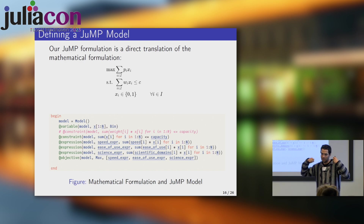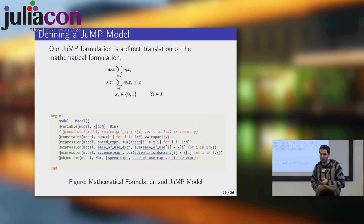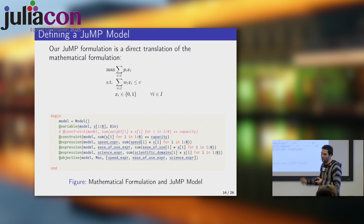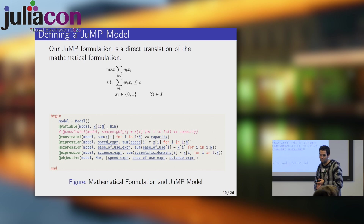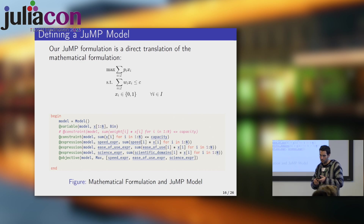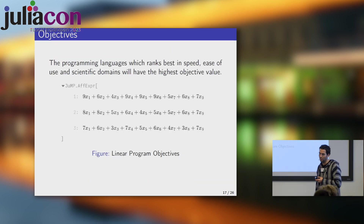We will now define a mathematical optimization problem. This is what we call a knapsack problem — we have a backpack. The constraint is we only want to use one language and not be in the two-language problem, so the constraint is you can only choose one language. In the next part, which is your homework, there will be weights assigned to different criteria, so maybe ease or speed or ecosystem is more important. We then have variables — one for every programming language — and the constraint is exactly one.